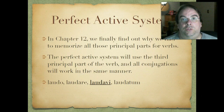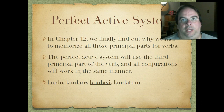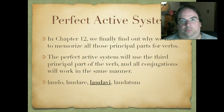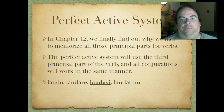The good news is all conjugations work the same. So we won't have to differentiate between 1st, 2nd, 3rd, 3rd IO, and 4th. The good news is we take that perfect stem — that third principal part — and stick new endings on it. So let's take a look at this model verb that we have.